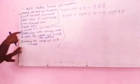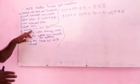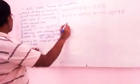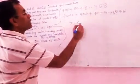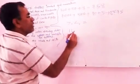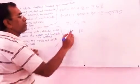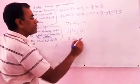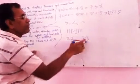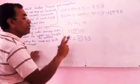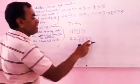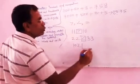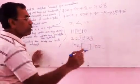Now I am going to teach you topic number 6: the greater than, less than, or equal to signs. The open side faces the bigger number and the closed side faces the smaller number. For example: 11 and 10 — 11 is bigger, so we write 11 > 10. Another example: 22 and 33 — 33 is bigger, so 22 < 33. If both numbers are the same, like 102 and 102, you write the equals sign.